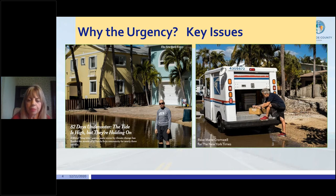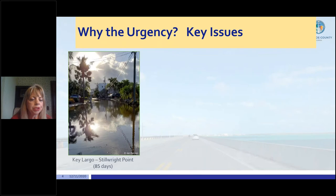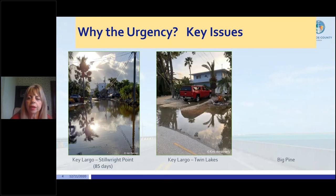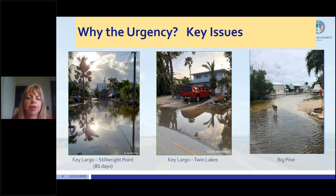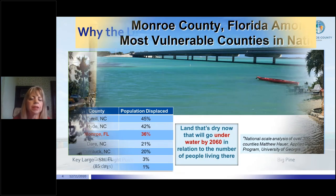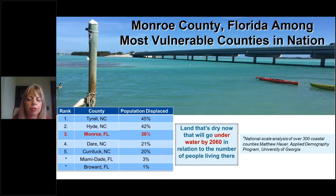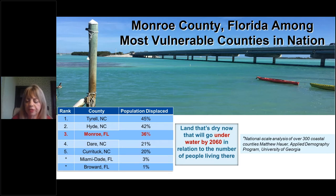We have to really get moving and determine what we're going to do about these roads, because residents cannot continue to live in circumstances like that. Back in 2015 to 2016 is when it really seemed to get out of hand and neighborhoods started going under many inches of water for days or weeks at a time. We're the third most vulnerable in the nation, and if we don't do anything to raise roads or prepare ourselves, 36% of our population will be displaced by the year 2060. We only have 75,000 people in our county, but we want to maintain our people and our resilience so we can continue to have our visitors.